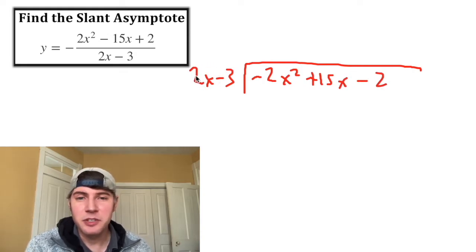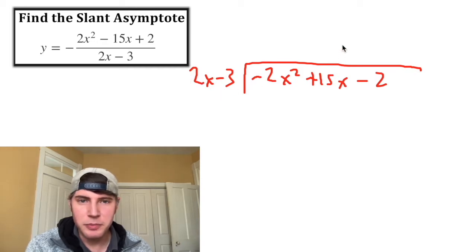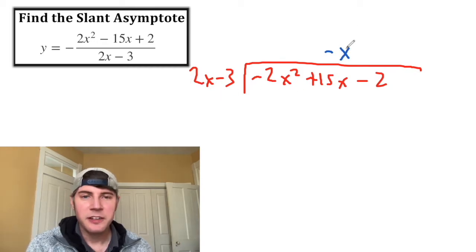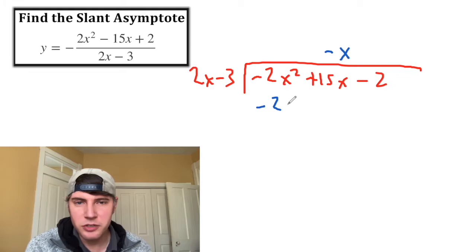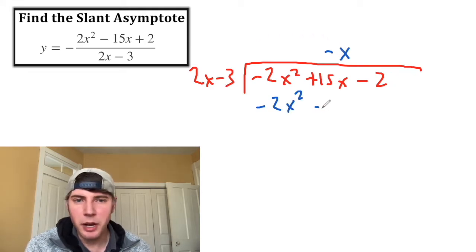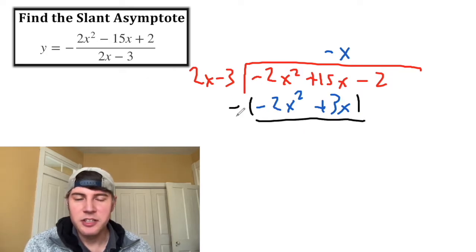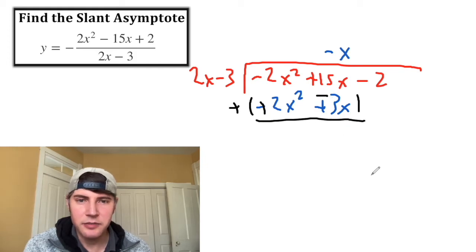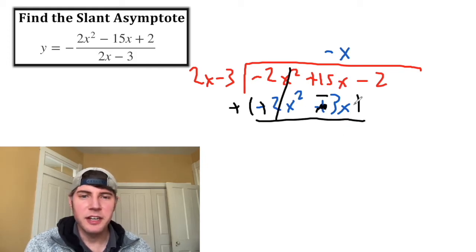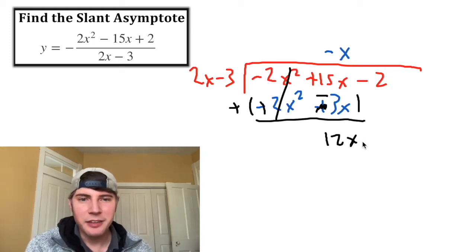We ask ourselves: how many times does 2x go into negative 2x squared? That is going to be negative x times. Negative x times 2x is negative 2x squared, and negative x times negative 3 is positive 3x. Next, we subtract this blue from the red — the negative distributes, these two cancel each other out, and 15x minus 3x is 12x. Then we bring down the minus 2.